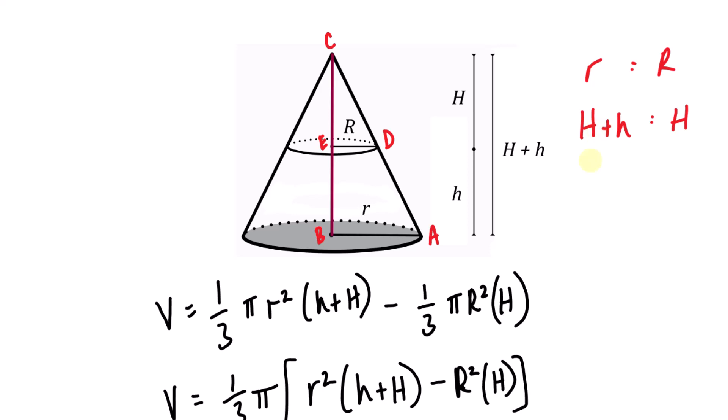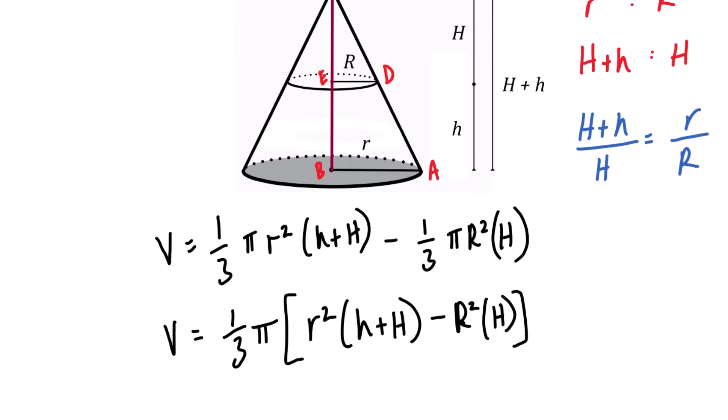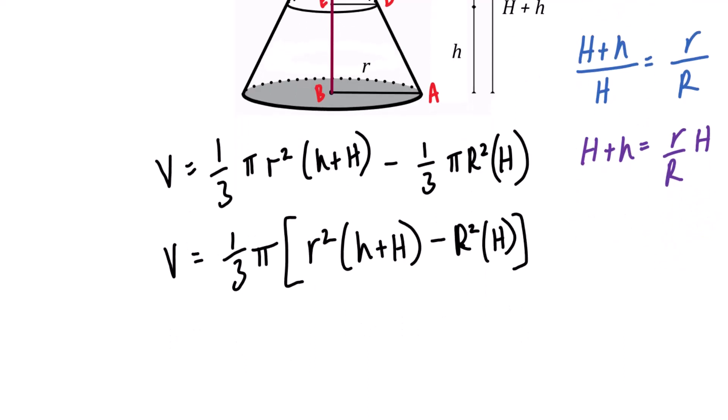That is, I can write down H plus lowercase h over capital H equals lowercase r over uppercase R. And from here, if I multiply both sides of that blue equation by H, we end up getting capital H plus h equals r over R times uppercase H. With this purple equation, I can substitute the right side into that part of my frustum equation. Let me show you what happens if I do that.